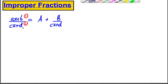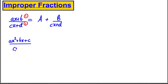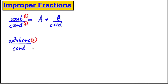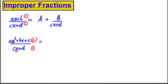Taking this a step further: if I had a quadratic on top and a linear on the bottom, the order of the top is 2 and the bottom is 1. 2 minus 1 is 1, so I would always get a linear term — something of order 1 — left over. I'd get a term of the form (ax + b), which is a linear term, plus c over the linear denominator.